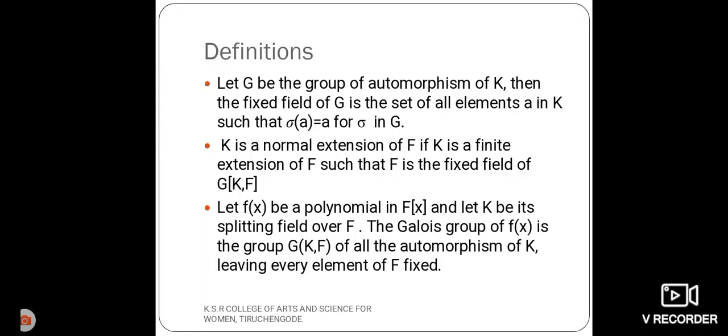First, see the definition. Let G be the group of automorphisms of K. Then the fixed field of G is the set of all elements A in K, such that sigma of A is equal to A for sigma in G.